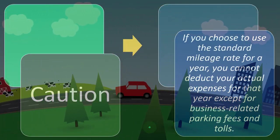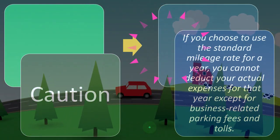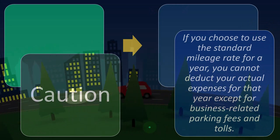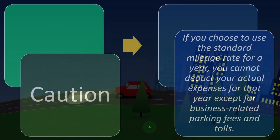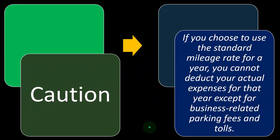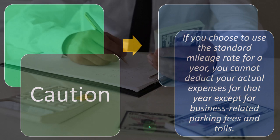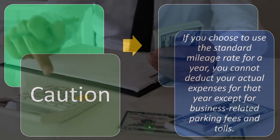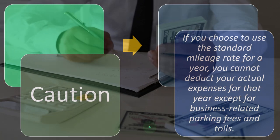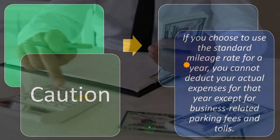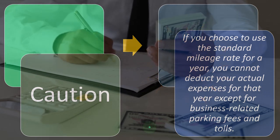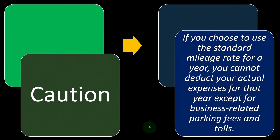Caution: if you choose to use the standard mileage rate for a year, you cannot deduct your actual expenses for that year, except for business-related parking fees and tolls. This becomes a bookkeeping problem because when you pay actual auto expenses on a cash-based system — which many small businesses use — those are going through the bank feeds. If you're going to use a mileage method, you have to basically remove the cash actual expenses and replace them with the mileage method, except you might still be able to get some actual expenses on top of the mileage method, such as parking fees and tolls.